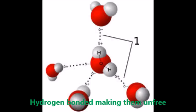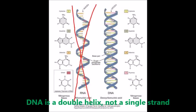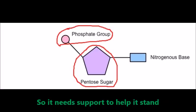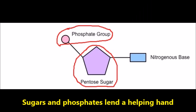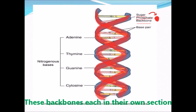DNA is a double helix, not a single strand, so it needs support to help it stand. Sugars and phosphate lend a helping hand so no DNA strand is left alone. They form the twin backbone, these backbones each in their own section.